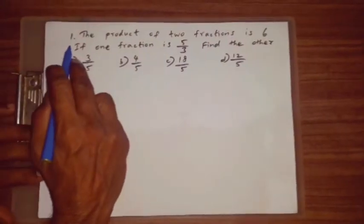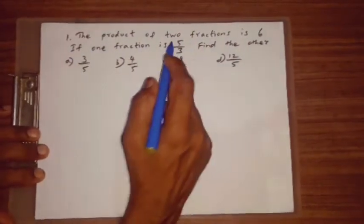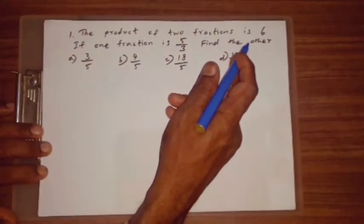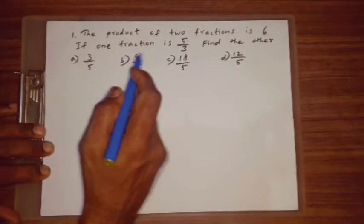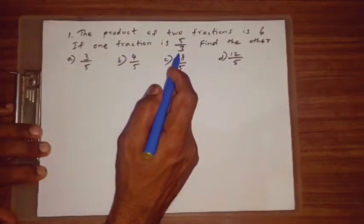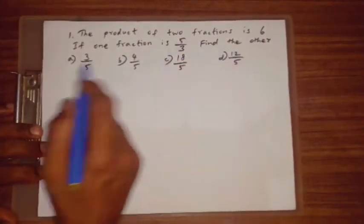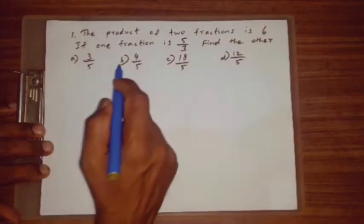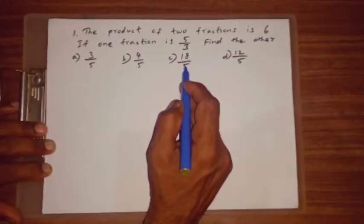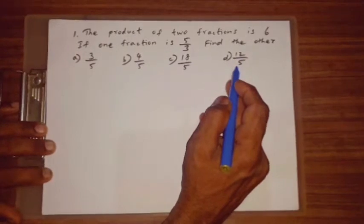Question number 1. The product of two fractions is 6. If one fraction is 5 by 3, find the other. A. 3 by 5. B. 4 by 5. C. 18 by 5. D. 12 by 5.